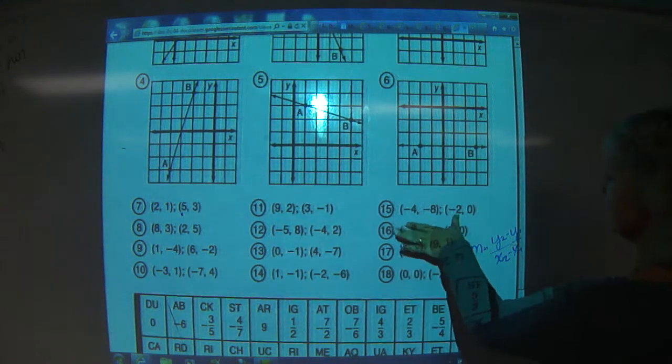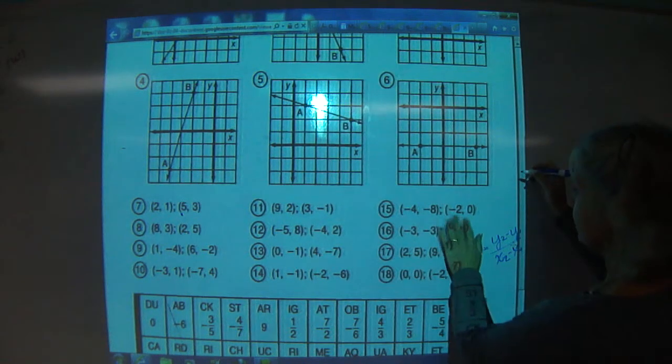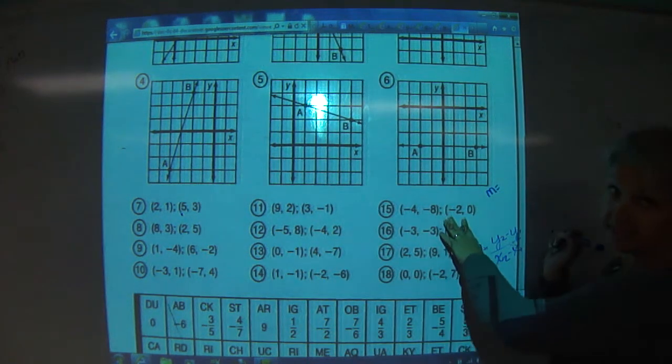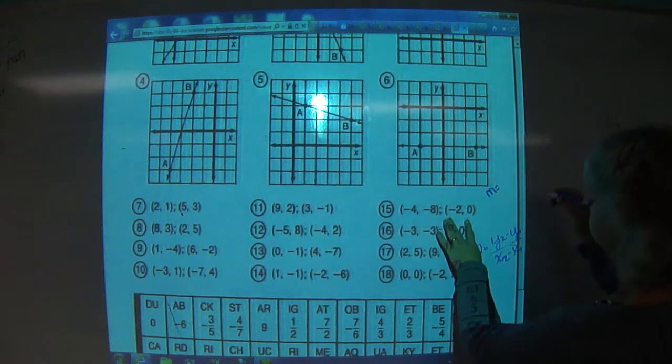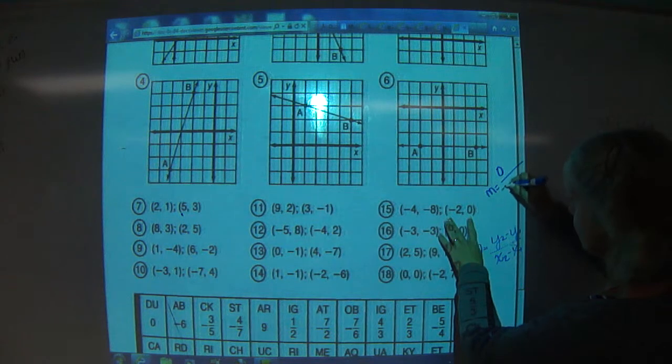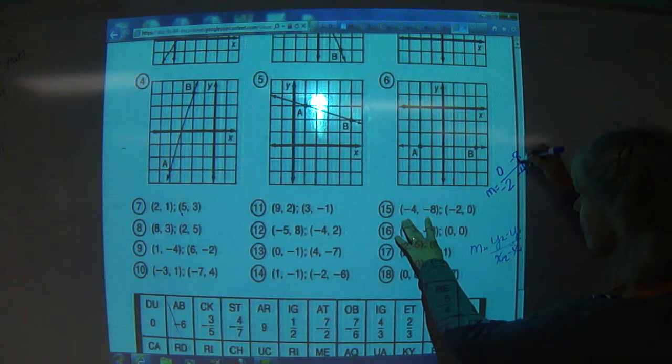So let's look at 15 because it's handy. Here's our point two, right? M equals, and M stands for slope. Don't ask me why. So we've got zero over negative two, and then we've got negative eight over negative four, and we're going to subtract them.